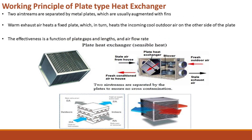Working Principle of Plate Type Heat Exchanger: Two air streams are separated by metal plates, which are usually augmented with fins. Warm exhaust air heats a fixed plate, which in turn heats the incoming cool outdoor air on the other side of the plate. The effectiveness is a function of plate gaps, lengths, and airflow rate.